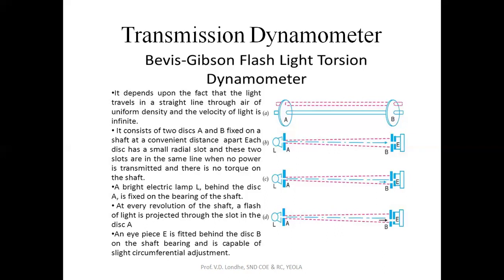Due to the twisting action, there is some lagging in the position of the eyepiece. The position of the eyepiece changes, and by knowing the angle of lag, we measure the change in angle of the light coming from the source through the eyepiece. In this way, for the torsion type of dynamometer, we measure the brake power for any engine.